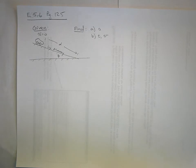To Example 5.6 on page 125, I'll read the example. It says a car of mass m is on an icy driveway inclined at an angle of theta as shown in the figure.